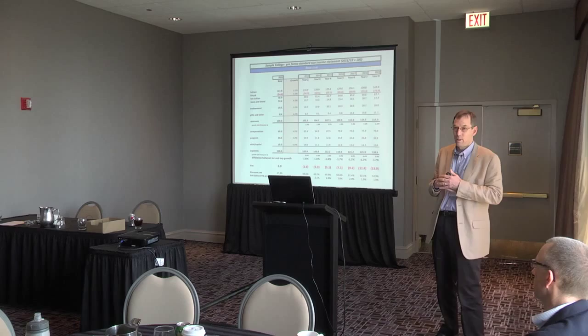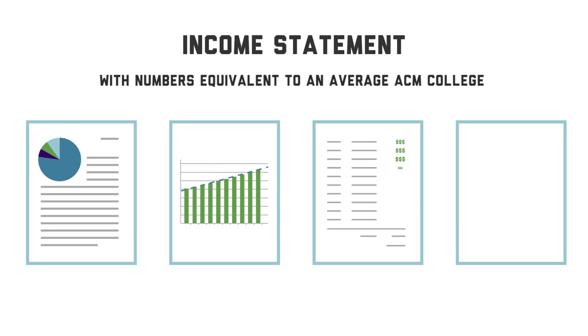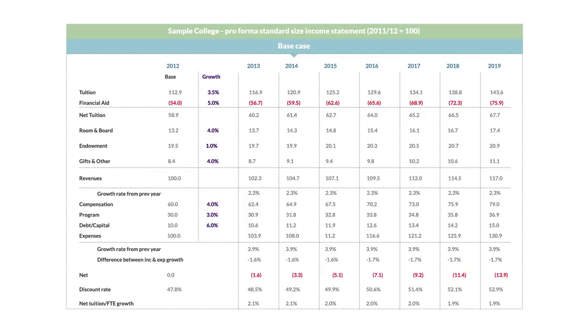What I'm going to do now is take you through some sample financial statements. The major revenue sources are net tuition, room and board, endowment, and gifts. Then the expenses — compensation, program, and debt and capital — I just used a simple 60, 30, and 10 split. The key column for all of the math going forward will be growth rates.